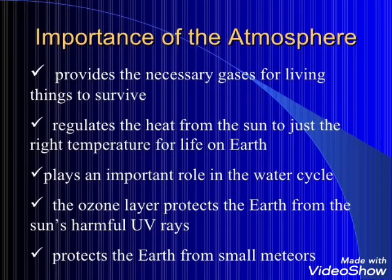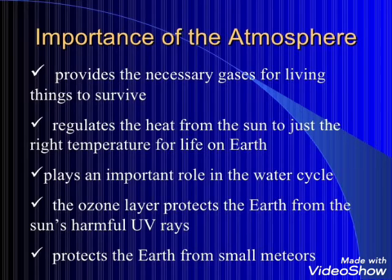Atmosphere helps in maintaining proper temperature on the earth. When sun rays fall on the earth, some of them get absorbed by the atmosphere and the rest are reflected back. In this way, the heat trapped by the atmosphere helps in prevention of earth from too much cooling.